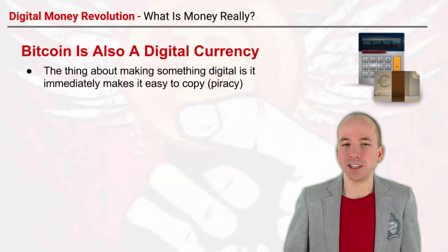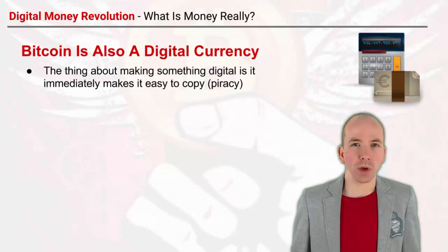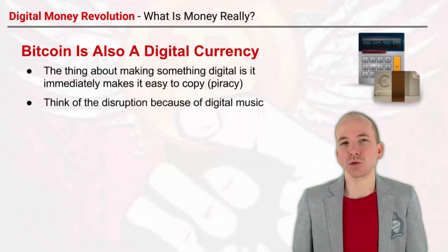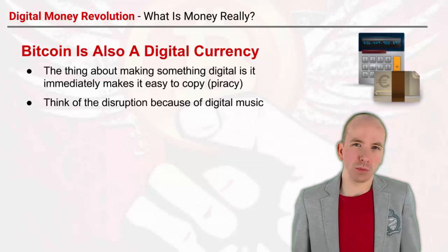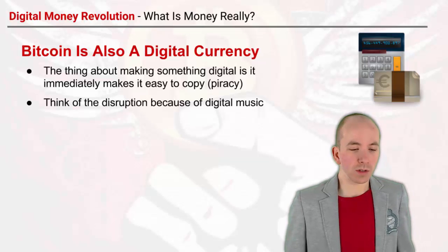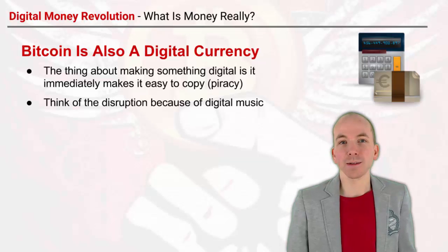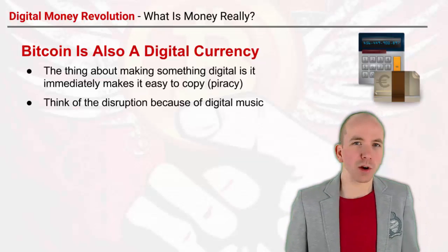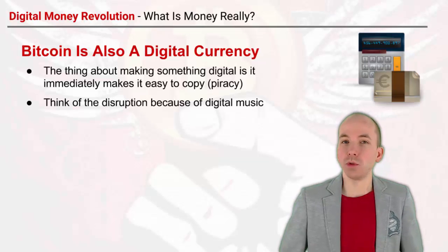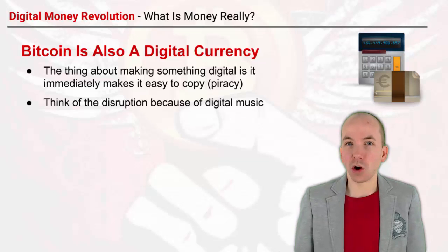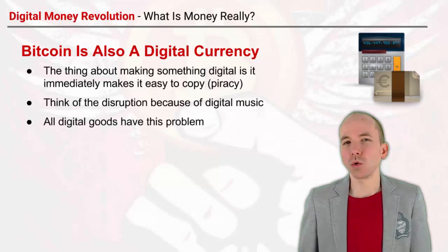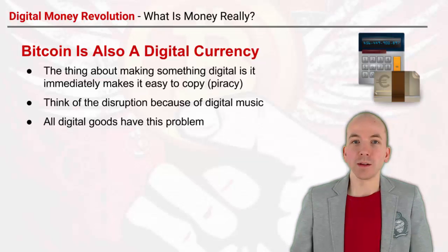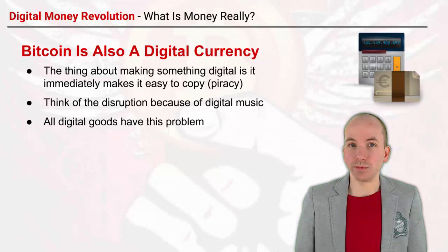Bitcoin is also called a digital currency, but the thing about making something digital is that it immediately makes it easy to copy — and you can copy it with almost no cost. Think about piracy and the disruption that digital music caused. Before digital music, the only way to copy music was to physically copy a plastic CD, and the manufacturing cost discouraged piracy. But when music became digital, all of a sudden it became free to copy. All digital goods have this problem, and the internet makes it bigger and bigger for all kinds of industries.